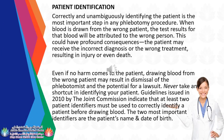Correctly and unambiguously identifying the patient is the most important step in any phlebotomy procedure. When blood is drawn from the wrong patient, the test results will be attributed to the wrong person. This could have profound consequences — the patient may receive an incorrect diagnosis or wrong treatment, resulting in injury or even death. Drawing blood from the wrong patient may result in dismissal of the phlebotomist and the potential for a lawsuit. Never take any shortcut in identifying your patient. Guidelines issued in 2010 by the Joint Commission indicate that at least two patient identifiers must be used before drawing blood.